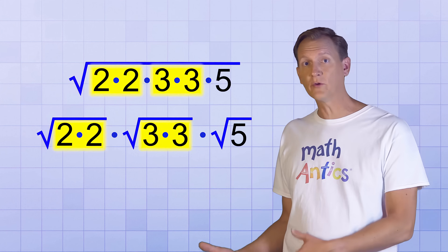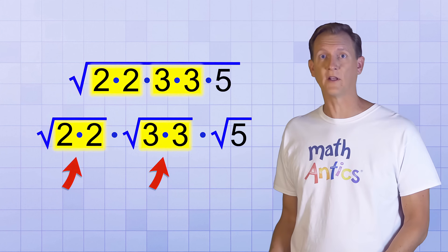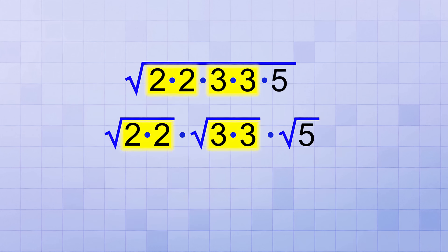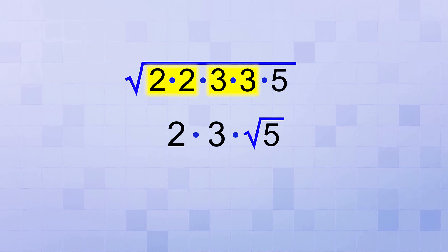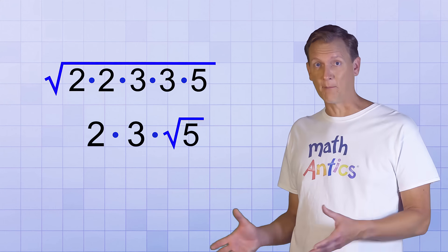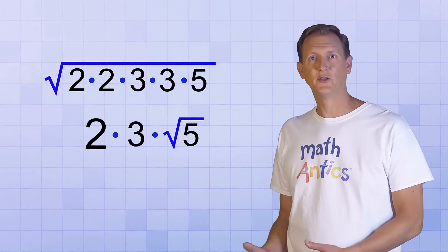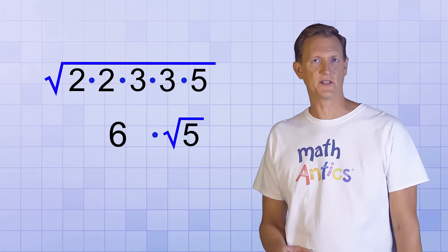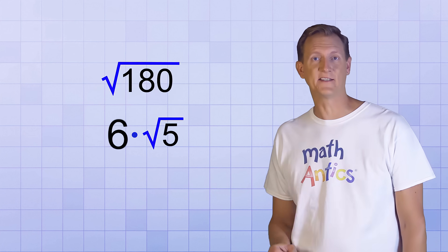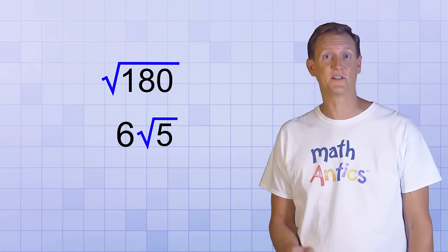Now we can simplify the square roots of the perfect squares that we found, so that they just become whole numbers. The square root of 2 times 2 simplifies to 2, and the square root of 3 times 3 simplifies to 3. That gives us 2 times 3 times the square root of 5. The square root of 5 can't be simplified any further. 5 is a prime number, so its only factors are 1 and itself. Great, now all we have to do is recombine the factors we simplified. 2 times 3 equals 6, so the simplified version of the square root of 180 is 6 times the square root of 5, or 6 root 5.